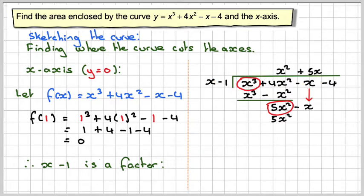5x squared minus 5x squared gives nothing. Minus x minus minus 5x is 4x. Bring down that minus 4, and then divide 4x by x to get plus 4.